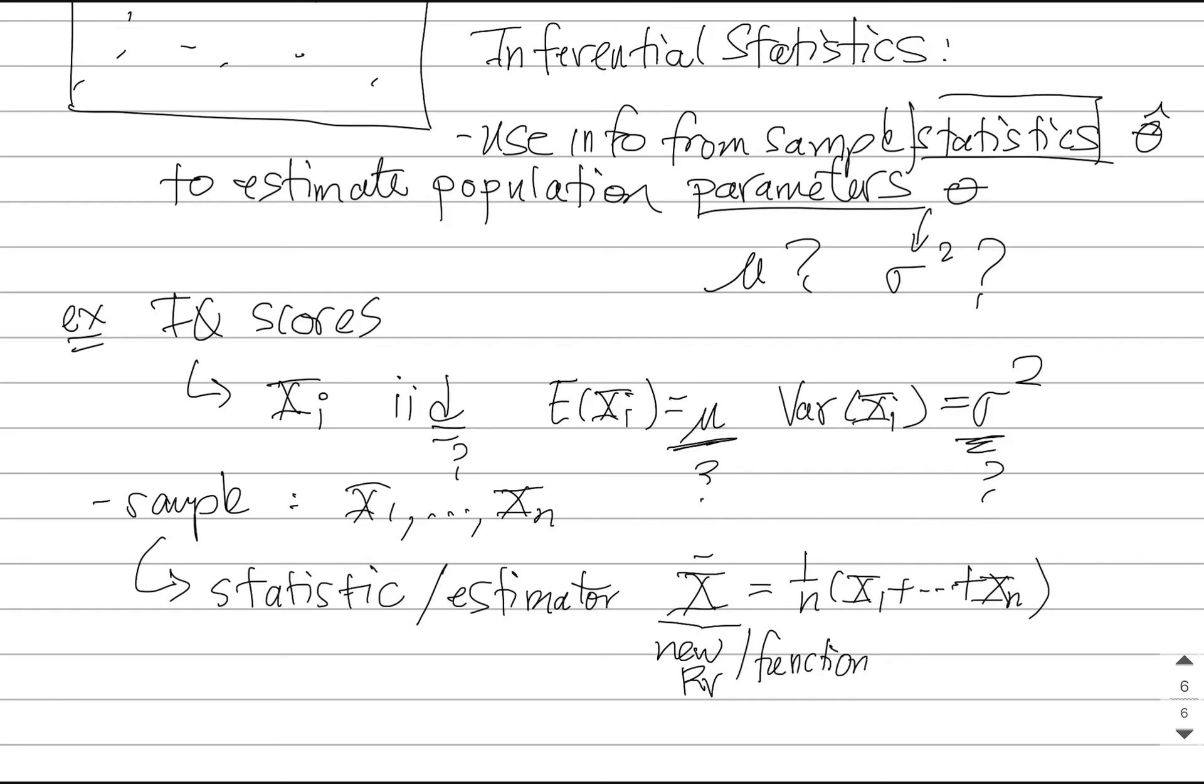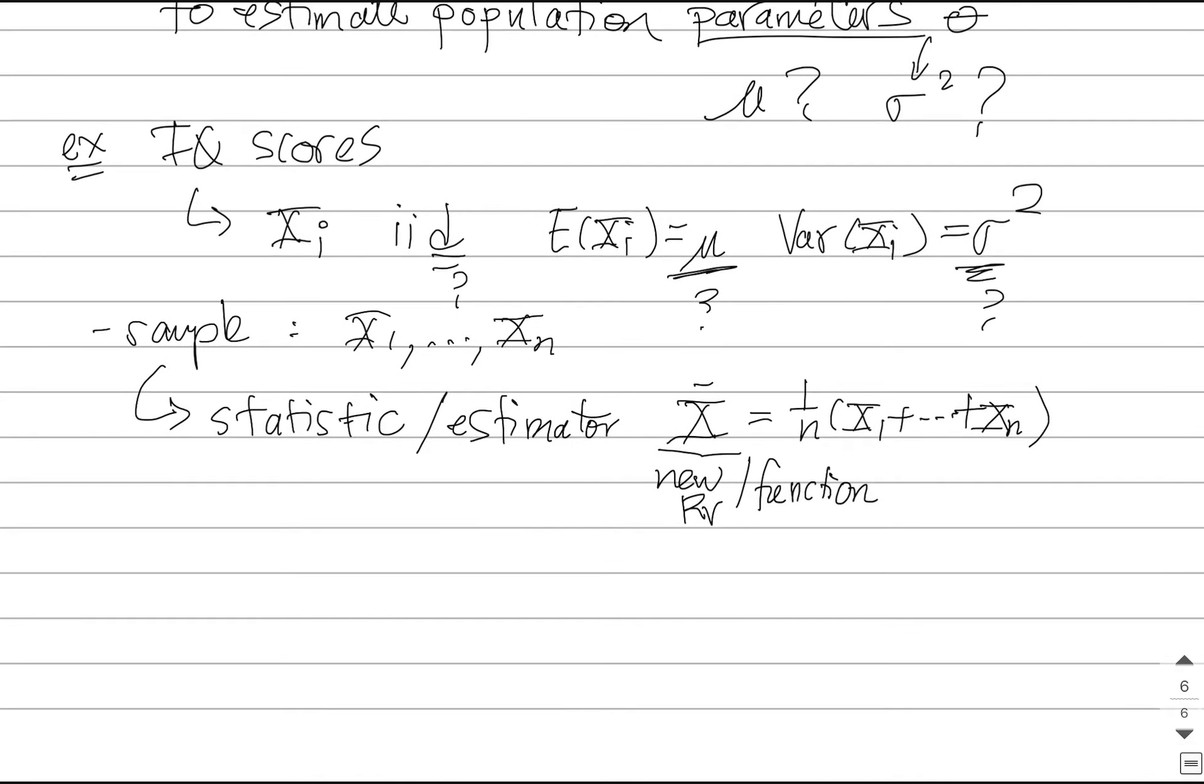Now once we collect our sample and we construct this statistic, we get an estimate or it's an observed value. And the value that is spit out, we denote with a lowercase letter, little x with the bar. So for example, it might be the case that when we take a sample of 31 people, we get an average sample IQ of 105.84. So this value, this is the number we observe by using this mathematical function or this statistic.